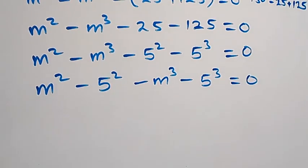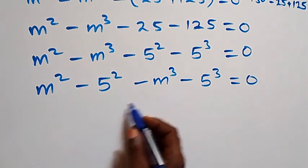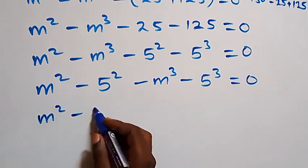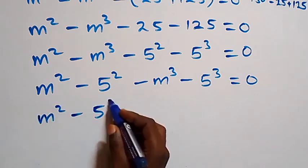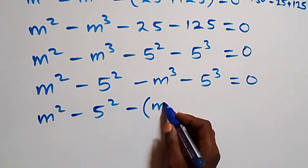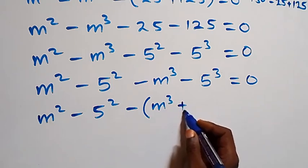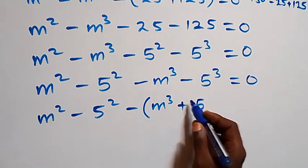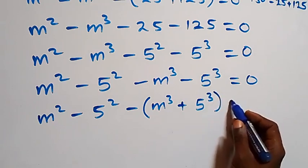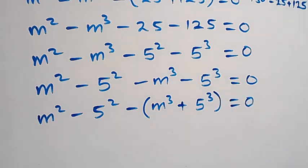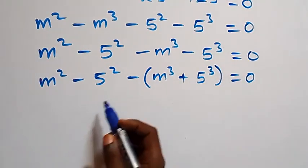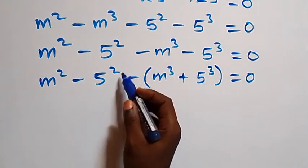This is the same thing as writing m squared minus five squared, and minus in bracket m cubed plus five cubed, close bracket, equals zero.